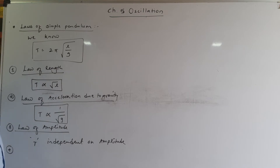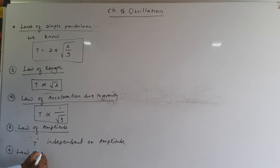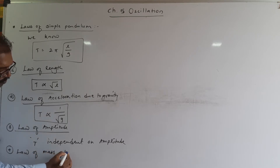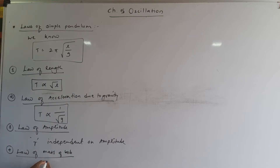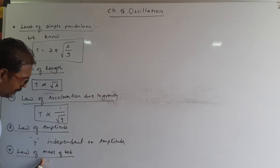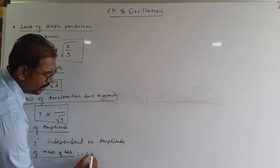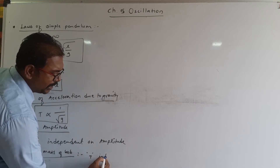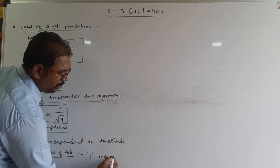The fourth and last law is the law of mass of bob. It is related to the mass of the bob. The period of a simple pendulum is independent of the mass of the bob — we write T is independent of the mass of the bob.